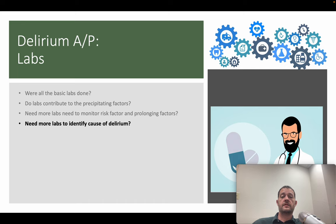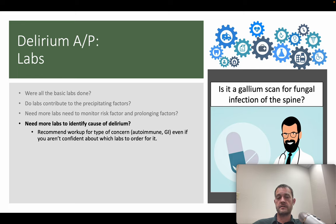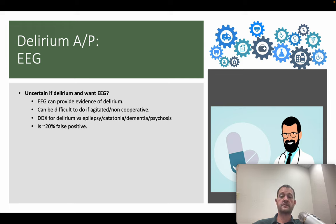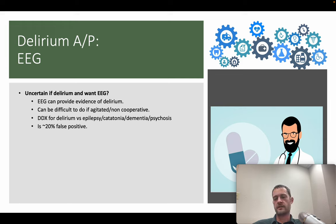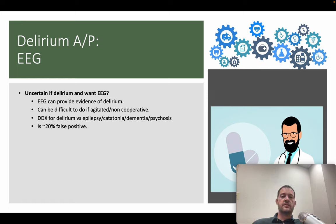If the cause of delirium is unclear, additional workup can be recommended. Don't worry if you don't know exactly how to order everything — just be clear about what you want tested for. Options include CSF analysis for autoimmune or infectious causes, urine porphyrins, arterial blood gas if CO2 retention is suspected, and specific imaging of areas of concern. Regarding EEG: it's generally not useful for most delirium situations — the primary reason being that hyperactive delirium patients won't sit still for the test.